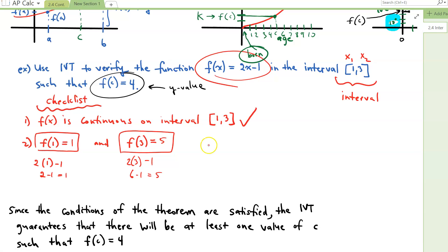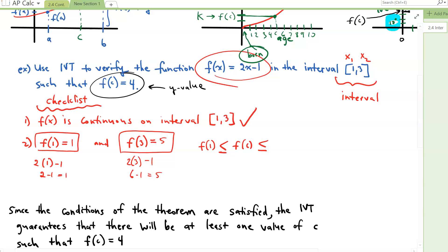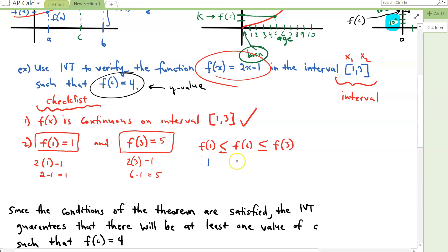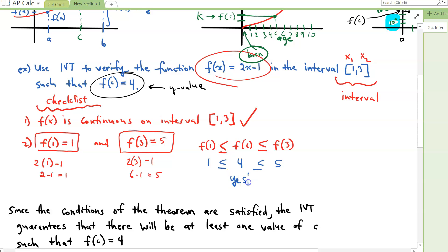F of C should be in the middle — between F of 1 and F of 3 — for IVT to work. F of 1 gave us 1, and F of 3 gave us 5. F of C is 4, which was given in the problem. Is 4 between 1 and 5? Yes — 4 is between 1 and 5, so our second condition is satisfied.